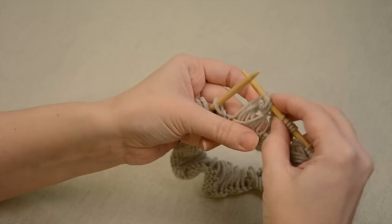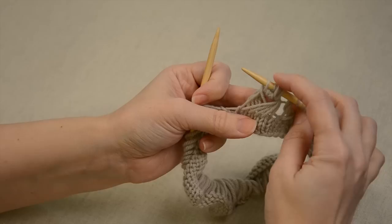And if you take a look here, we've created this little peacock stitch by doing our knit, purl, knit, purl, knit, into our five elongated stitches.